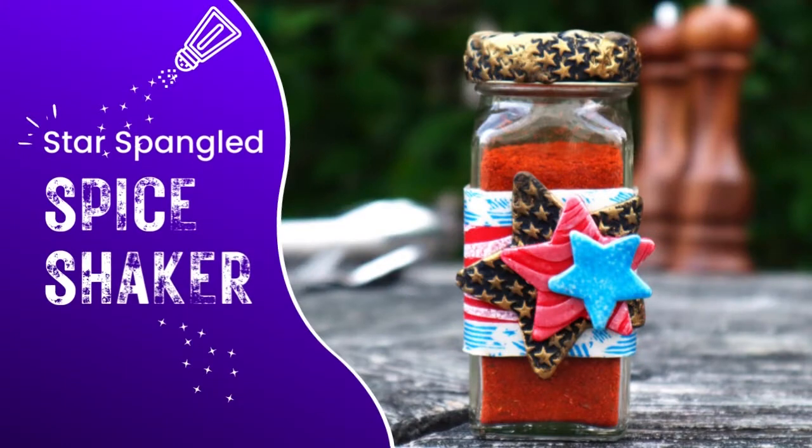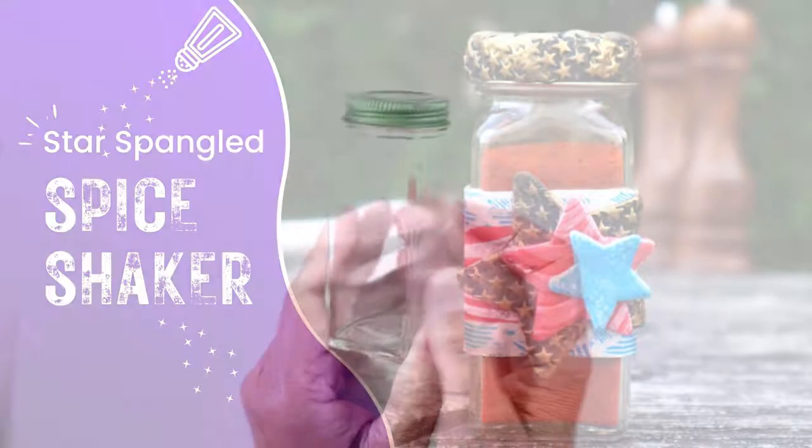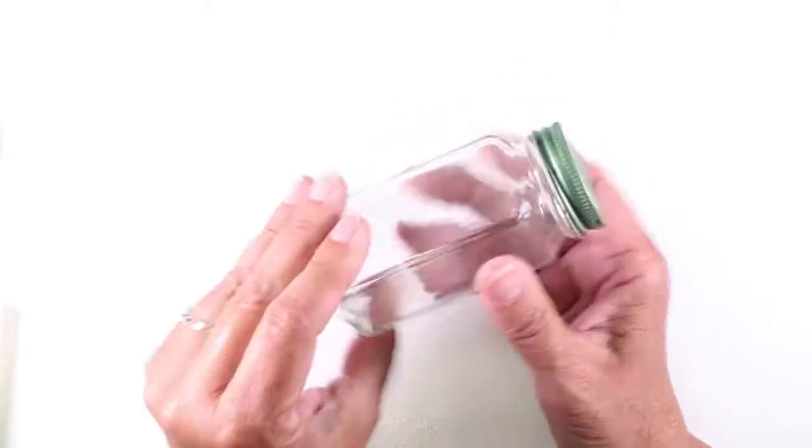I thought it would be fun to use supplies from the Stars and Stripes Create-Along box to decorate a spice bottle. The first thing you need is a bottle and this is just one that had something in it I used up.